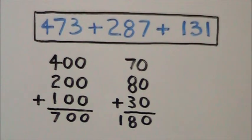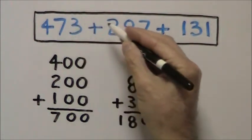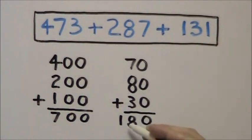Then we add up our tens columns, 70 plus 80 plus 30 to get 180.